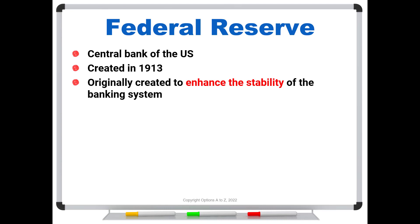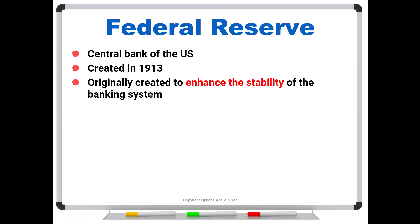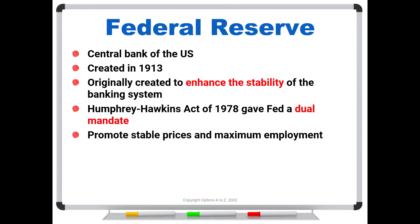This is where the Fed would step in and provide liquidity — we saw this during COVID and a number of different economic events throughout history. But it was the Humphrey-Hawkins Act of 1978, actually called the Humphrey-Hawkins Full Employment Act, that gave the Fed what's called a dual mandate. And that's really the two key things that the Fed should be focused on: number one, to promote stable prices, and number two, maximum employment. When we say maximum employment, that doesn't mean that everybody can have a job — we're just saying it's the maximum under ideal situations.